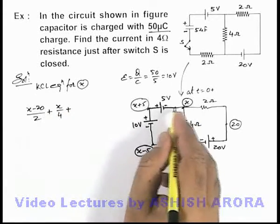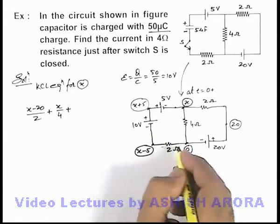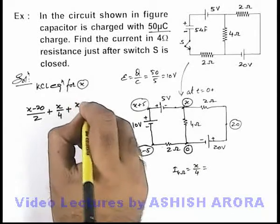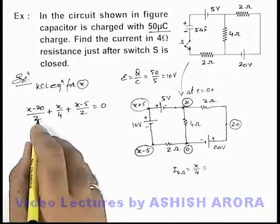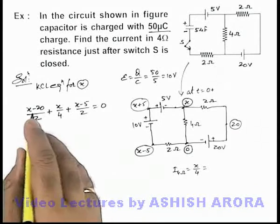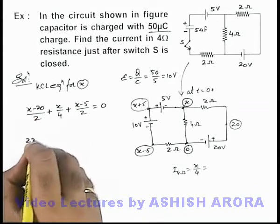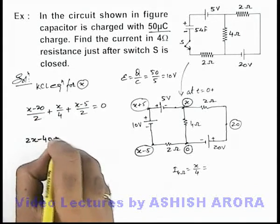Plus current flowing in this direction can be calculated by this resistance, which is x minus 5 by 2 is equal to zero. If we take LCM to be 4, in this situation we are getting it is 2x minus 40 plus x.